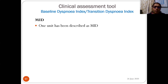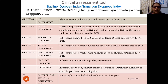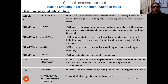The BDI scale assesses three components: functional impairment, magnitude of the task, and magnitude of the effort, providing a comprehensive baseline dyspnea assessment.